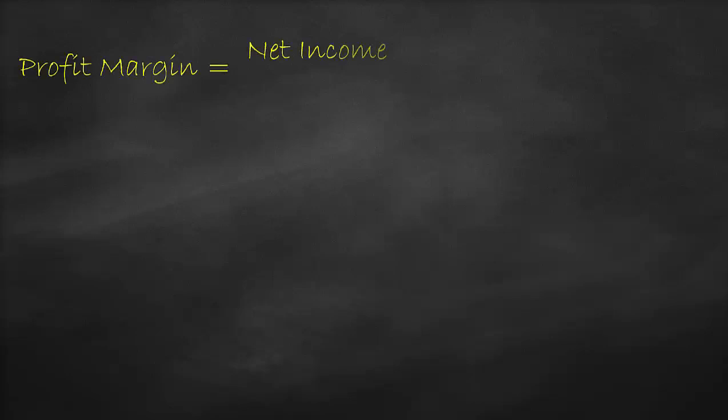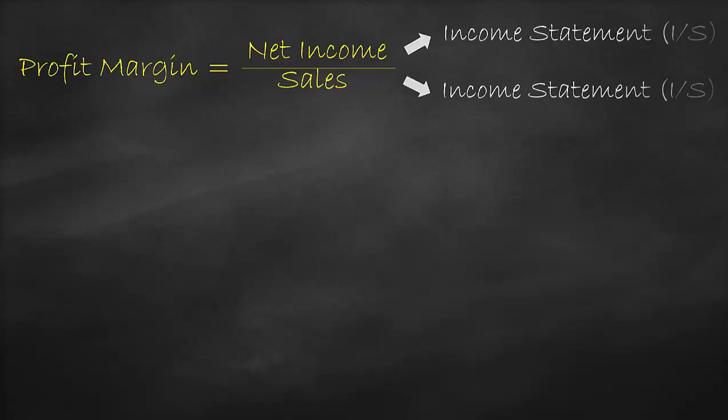The profit margin ratio is net income divided by sales. We get both the net income and sales from the income statement. Therefore, to compare apples to apples, we use net income and sales from the same year.